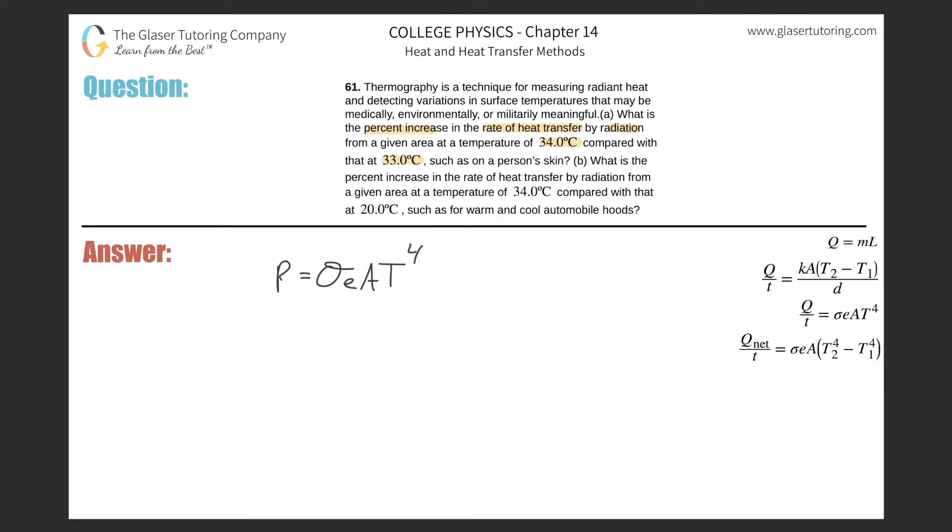So if I want to find the percent change, I can do this in a couple of ways. I think the best way might be to just find a fractional change. And then from there we can easily find the percent. So in other words, what I'm going to do is I'm going to find the rate of energy transfer at 34 degrees Celsius. So all of these values should be at 34 degrees Celsius and then basically compare that to the rate. So divide this whole thing by then the power at 33 degrees Celsius. This would be Sigma E A T at 33 now.